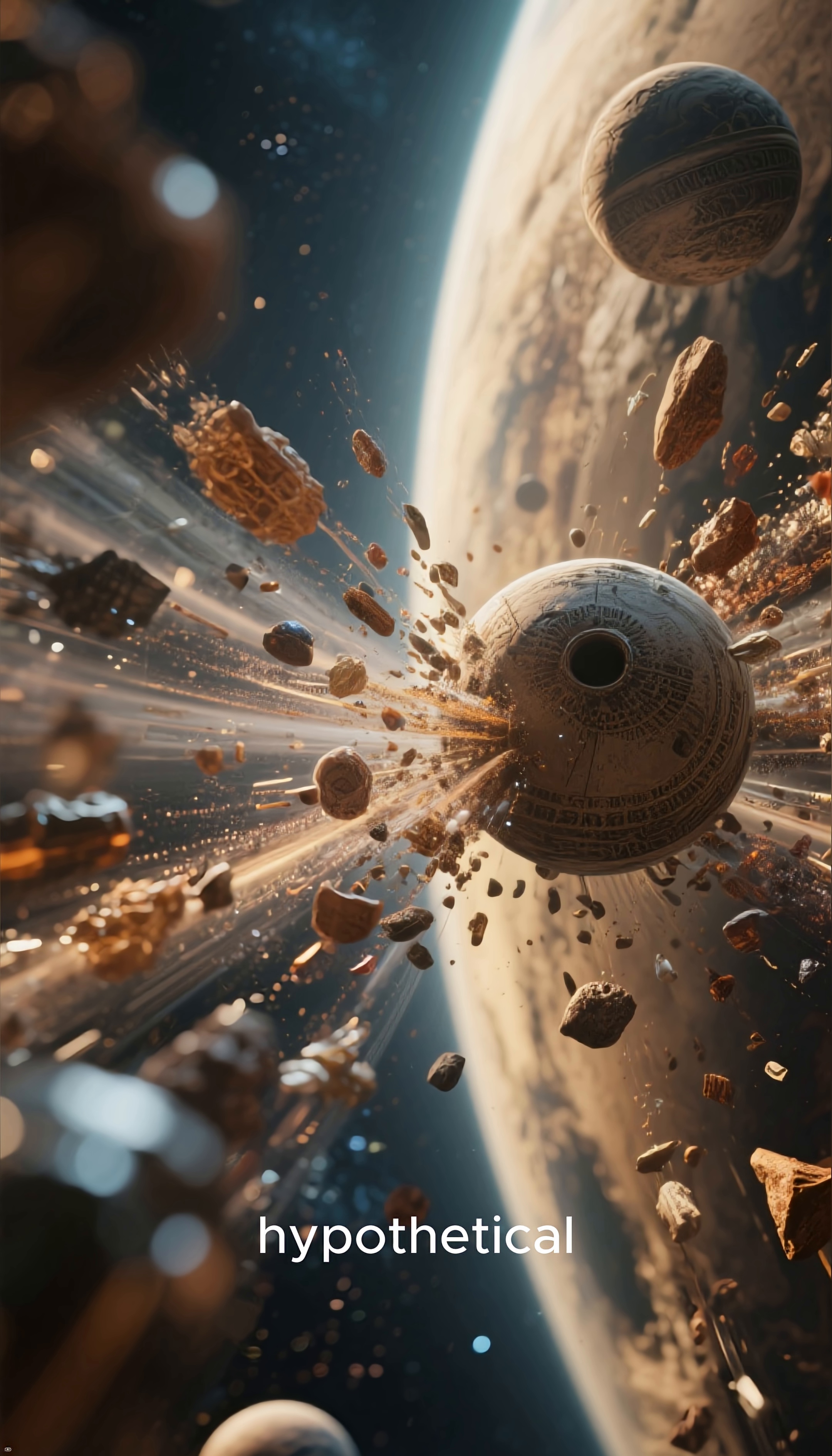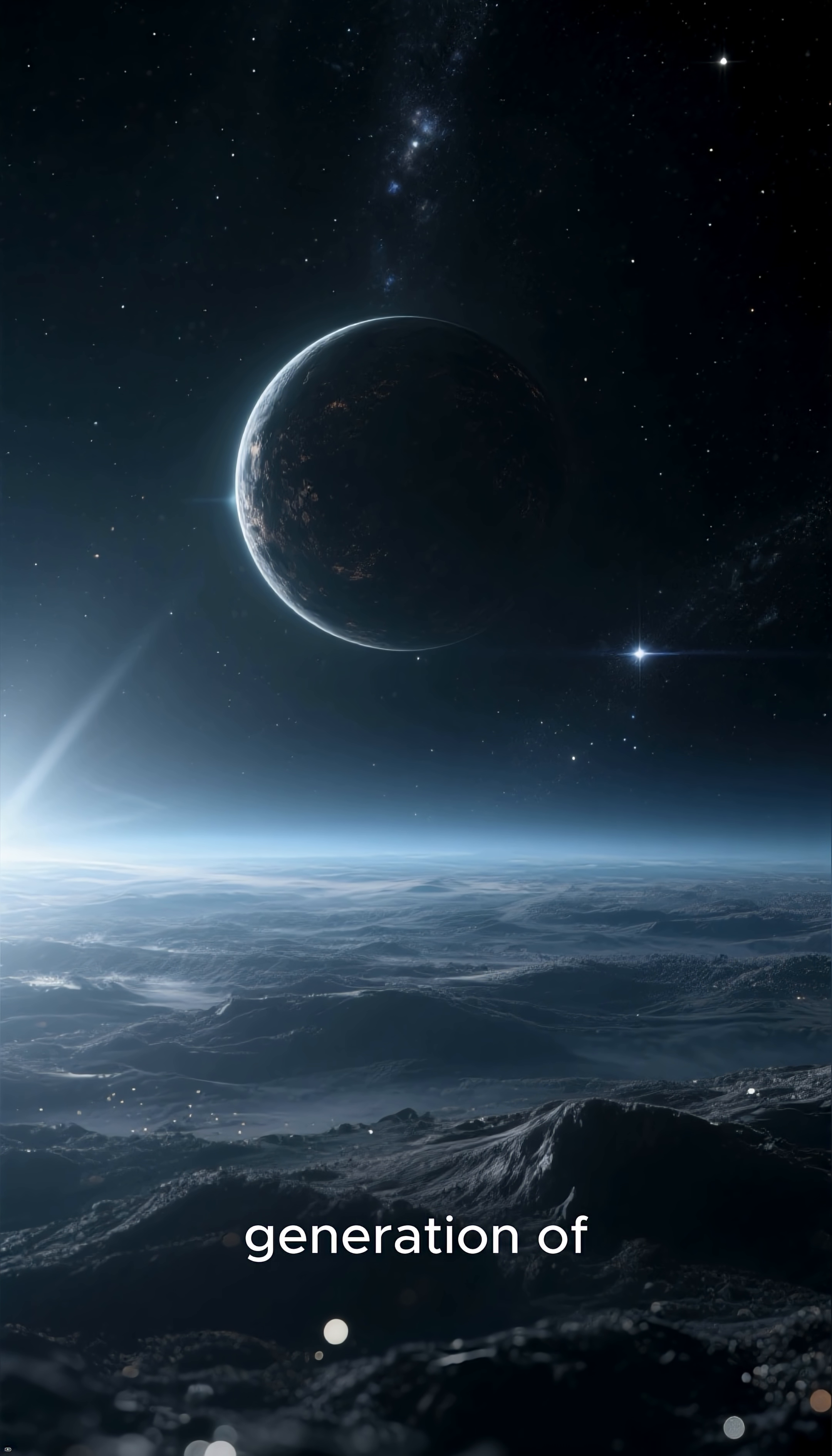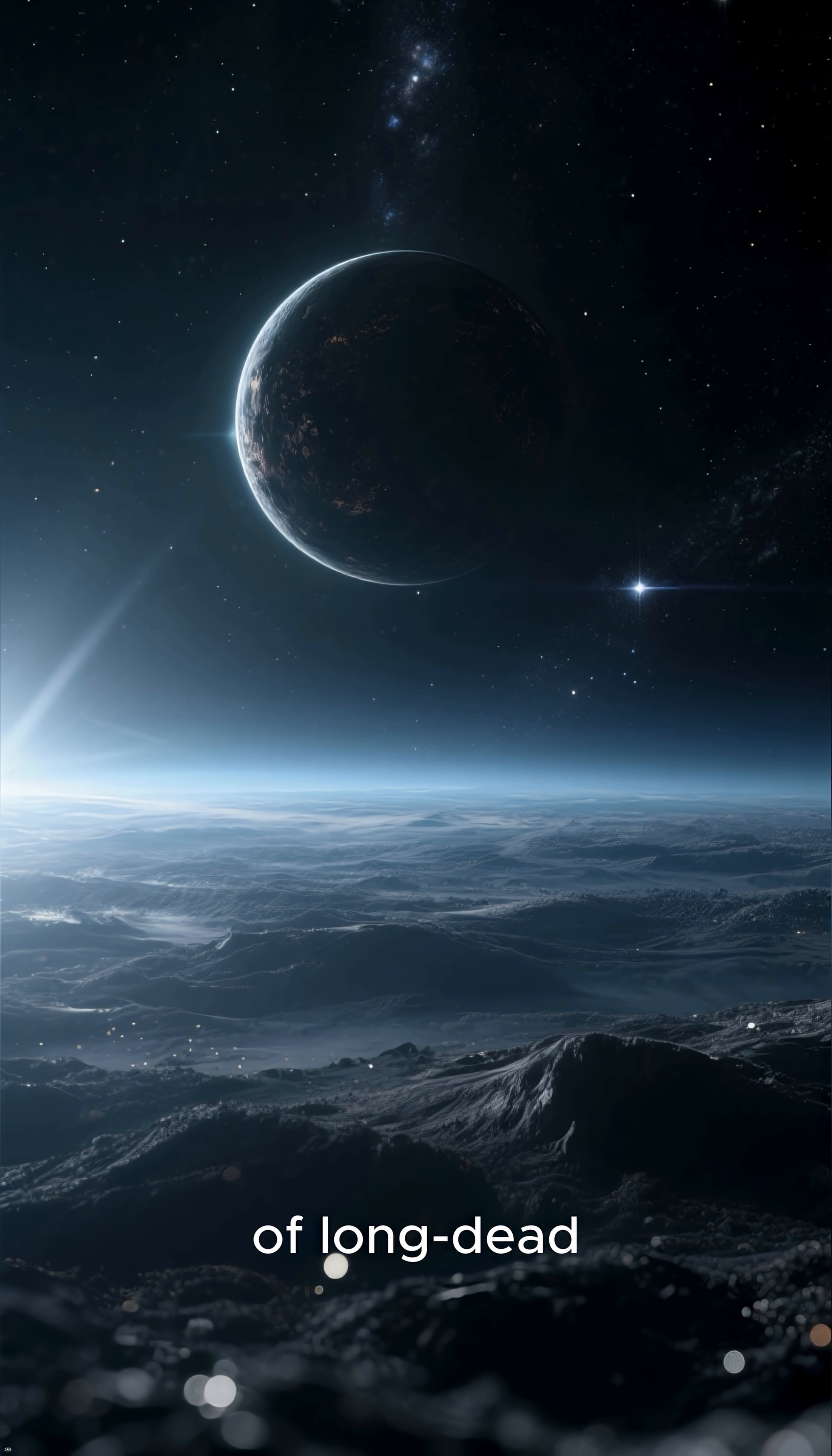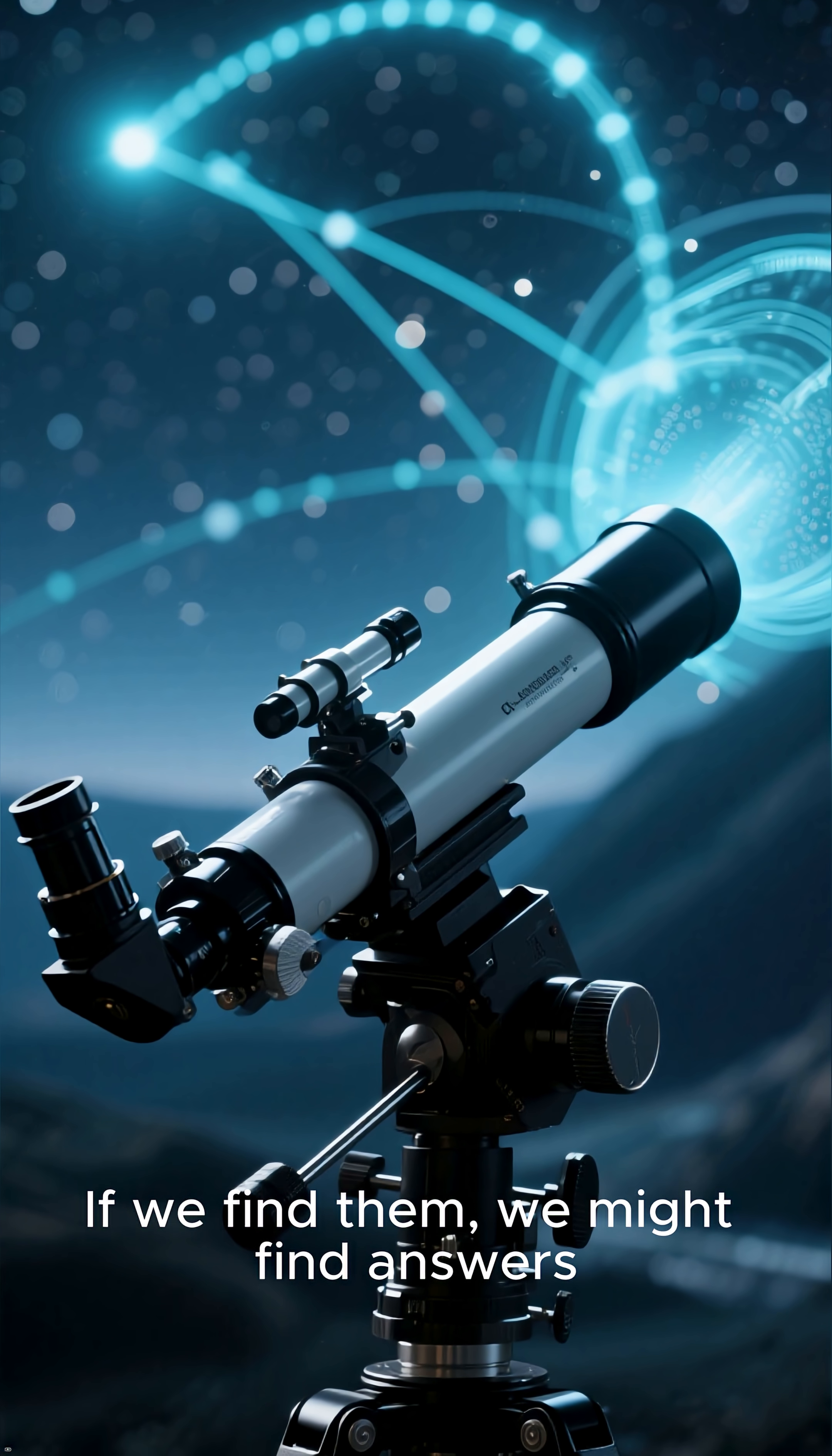What if the stuff that makes up these hypothetical ancient planets came from outside these new baby universes? Rogue planets ejected from a previous generation of stars and planetary systems could wander the multiverse, carrying with them the remnants of long-dead civilizations. The next generation of telescopes will scour the skies looking for signs of these rogue planets. If we find them, we might find answers.